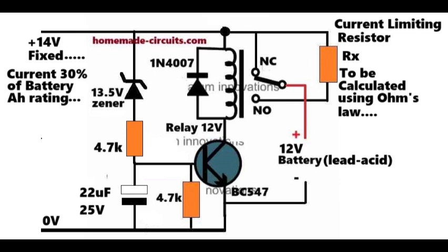For the current limiting, the above current may be reduced to around 7% of the battery AH rating. The current limiting resistor must be calculated accordingly, using Ohm's law.